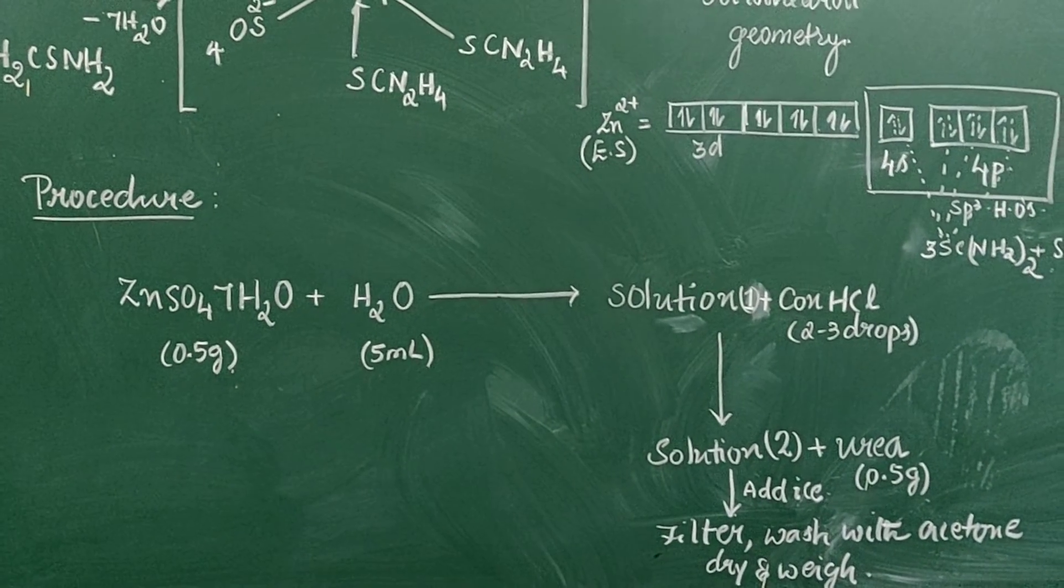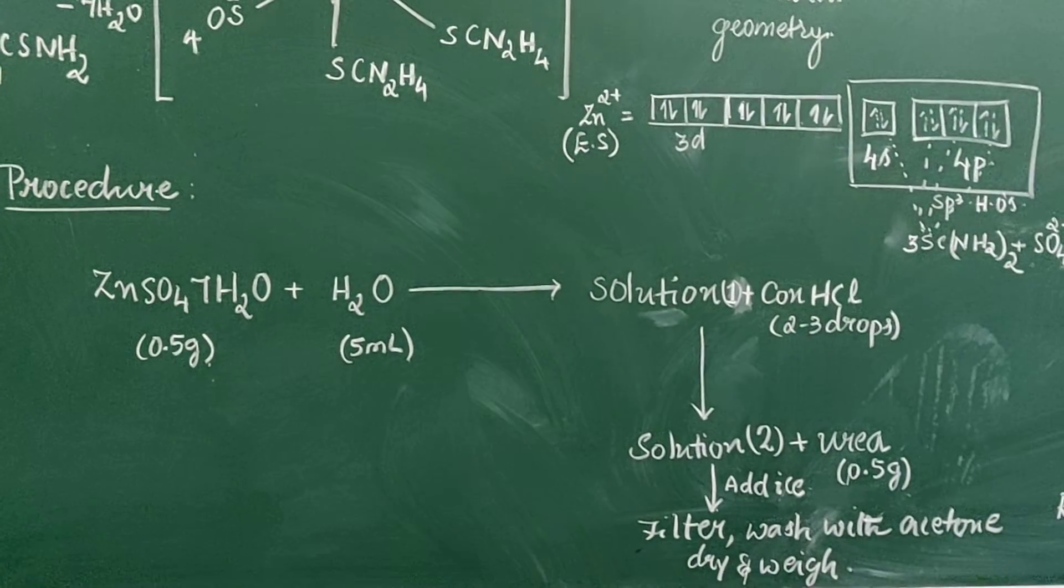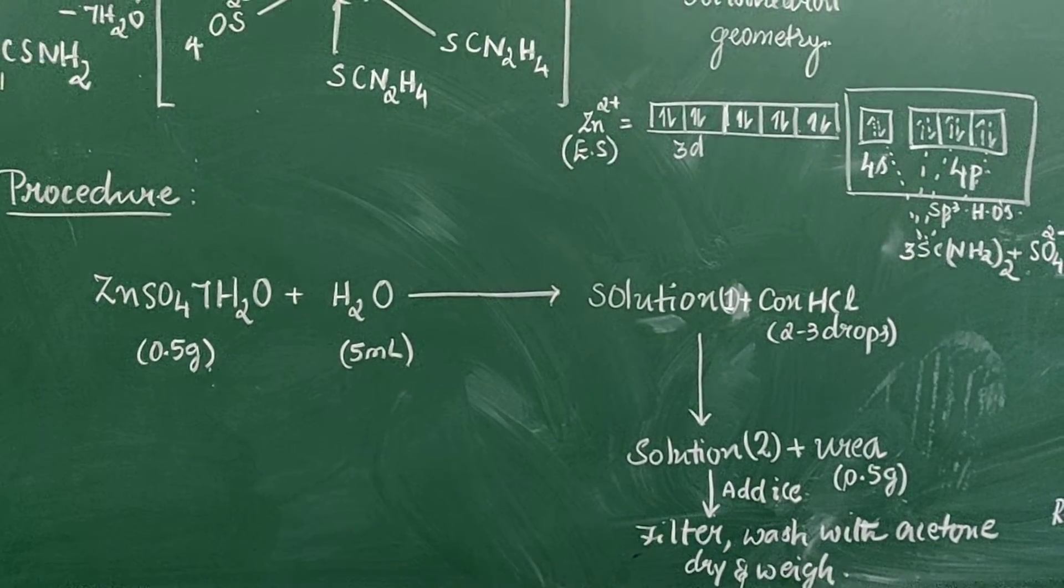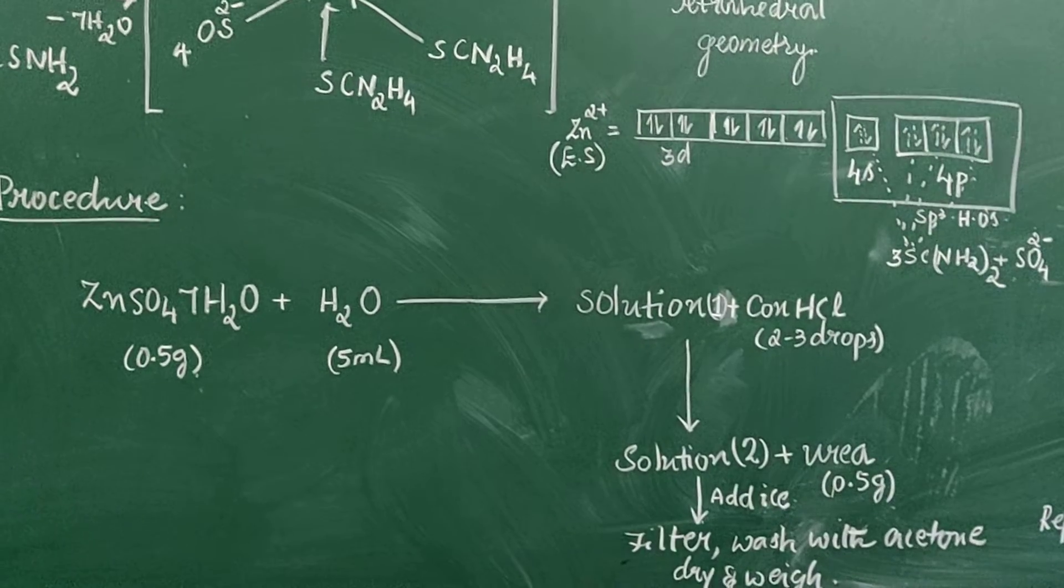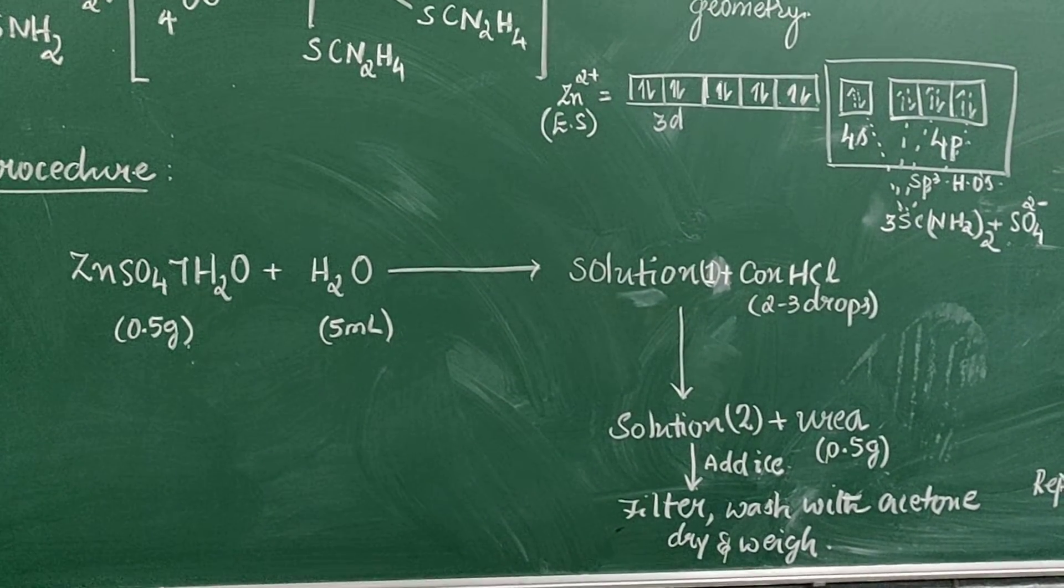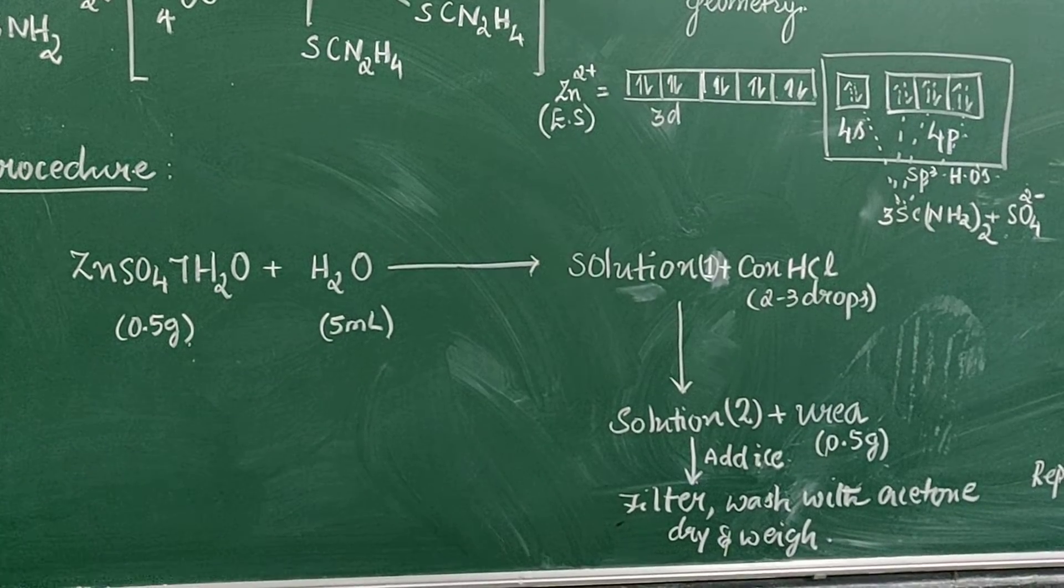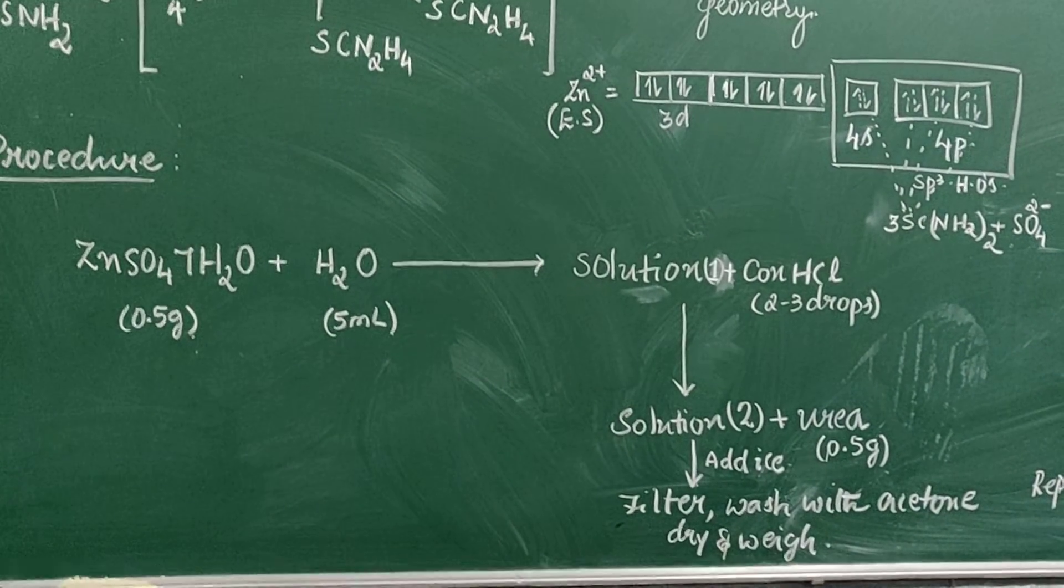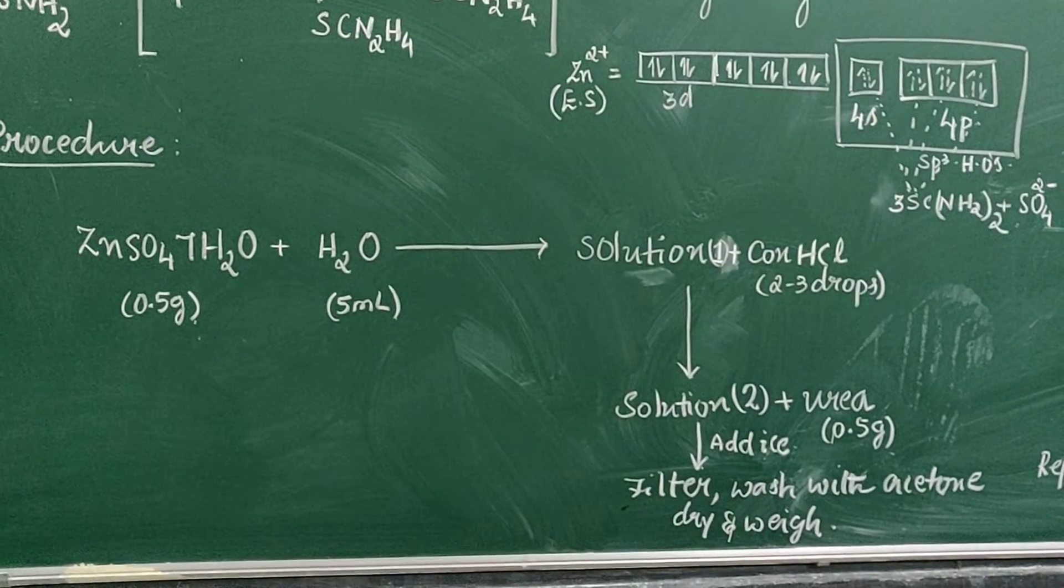To this solution add 2 to 3 drops of concentrated hydrochloric acid. You get another solution, solution 2. To that you add thiourea, 0.5 grams, and then if you do not see the crystals, you can add ice.